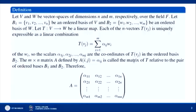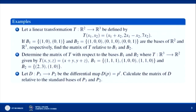This matrix — the same A we discussed — is called the matrix of T relative to the pair of ordered bases B1 and B2. To understand this, let us discuss a few examples based on this concept.